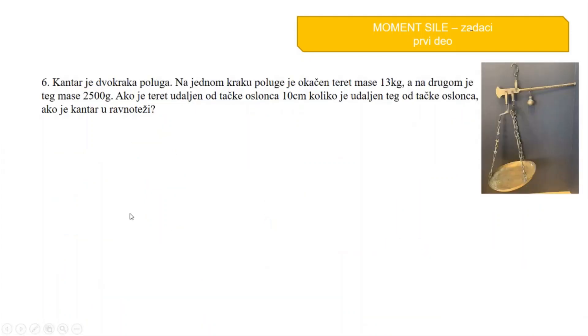Kantar je dvokraka poluga. Na jednom kraku poluge je okačen teret mase 13 kg, a na drugom je teg mase 2500 grama. Ako je teret udaljen od tačke oslonca 10 cm, koliko je udaljen teg od tačke oslonca, ako je kantar uravnoteži?